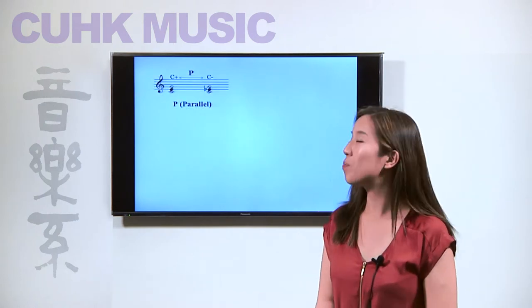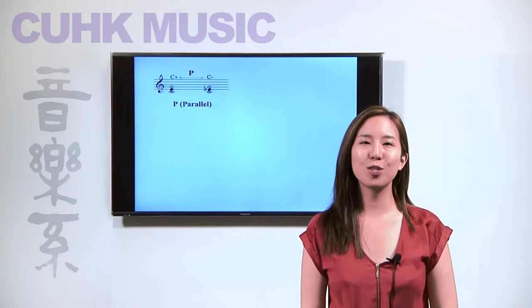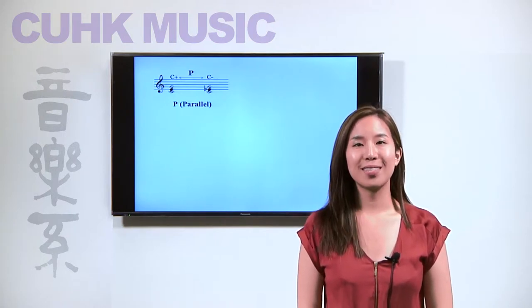The first triadic transformation is called P for parallel major or minor triads. It indicates a semitonal motion between triads that share two common tones and one common root, like C major and C minor. The common tones C and G are preserved, while E moves to E flat or vice versa.